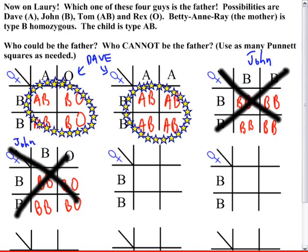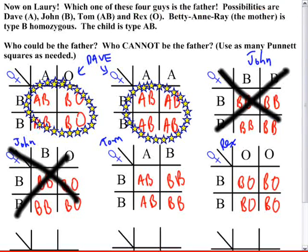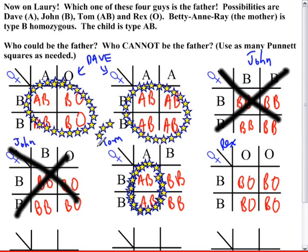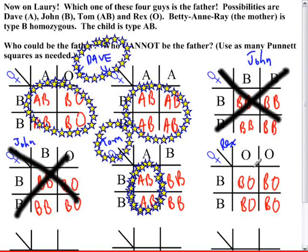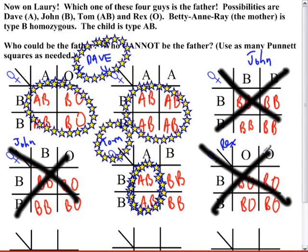With Tom, who is type AB, there is a fifty percent chance of a type AB child and a fifty percent chance of type B — so Tom is also a possible father. Dave and Tom are both consistent. Rex, who is type O, can only produce type B children with this homozygous B mother, since BO means only the B antigen is expressed — so Rex is also ruled out. That is the end of the review for codominance and blood type.